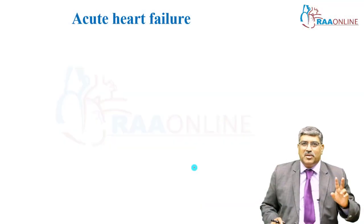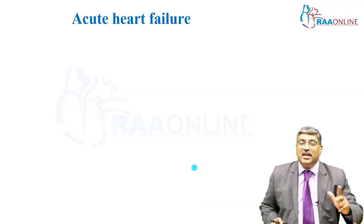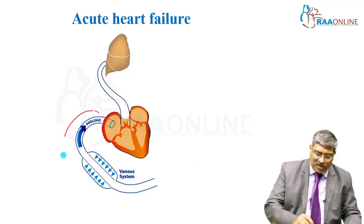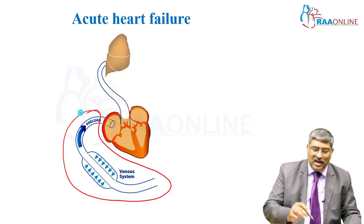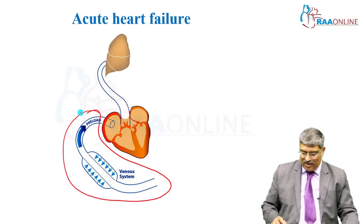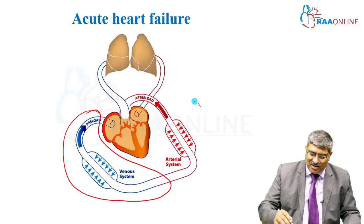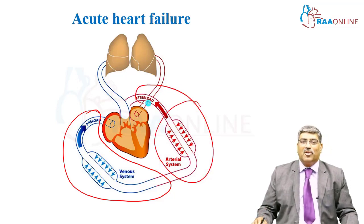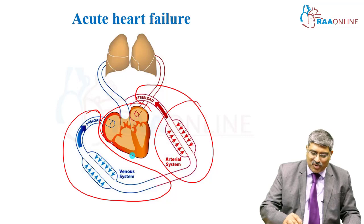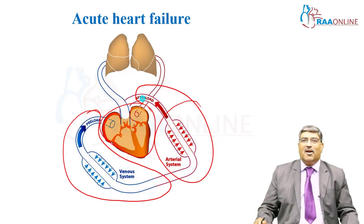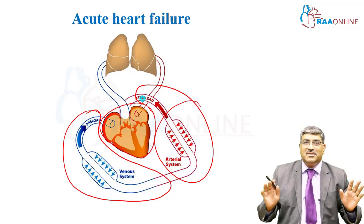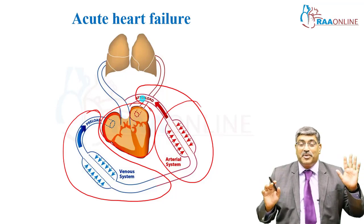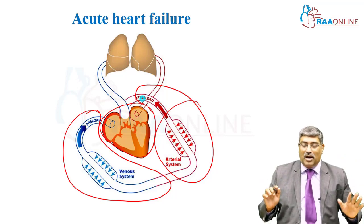Three most important variables: one is preload — your volume management can aggravate heart failure. Another is systemic vascular resistance, your afterload. The third is contractility. All three can play a major role in the perioperative period, precipitating heart failure.